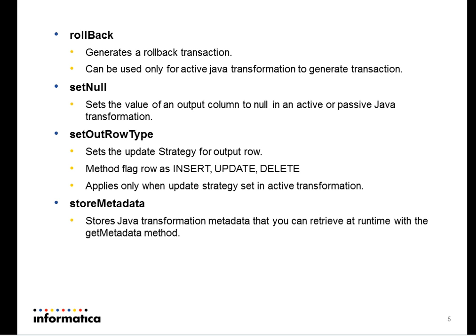SetOutputRowType is used in conjunction with the GetOutputRowType. Where your update strategy has to be set, the flag rules can be set as Insert, Update, or OK.